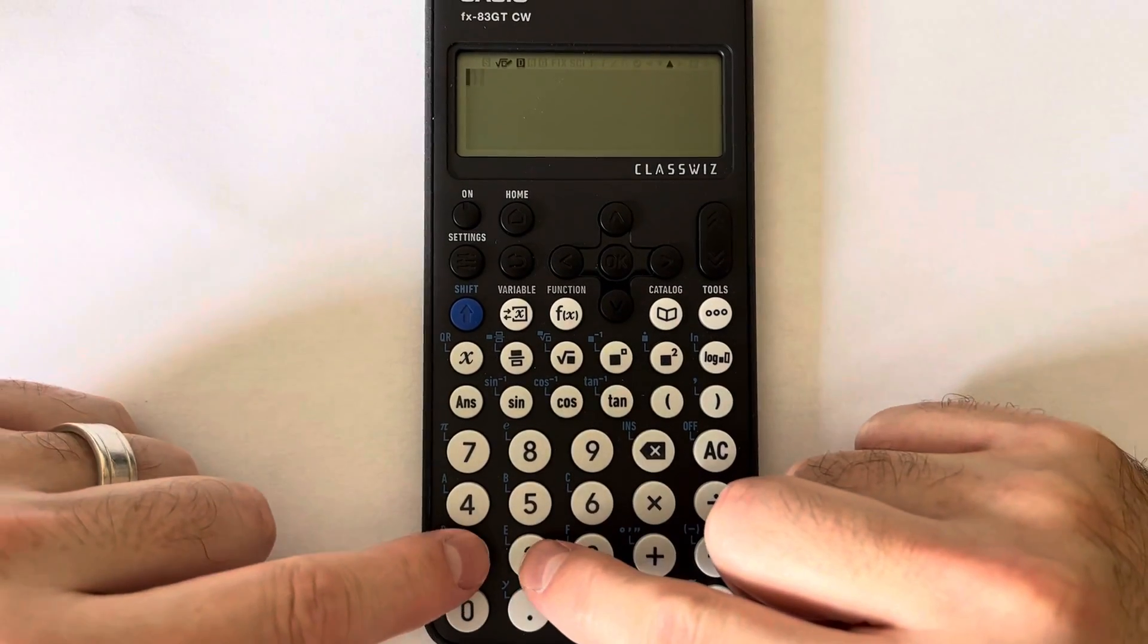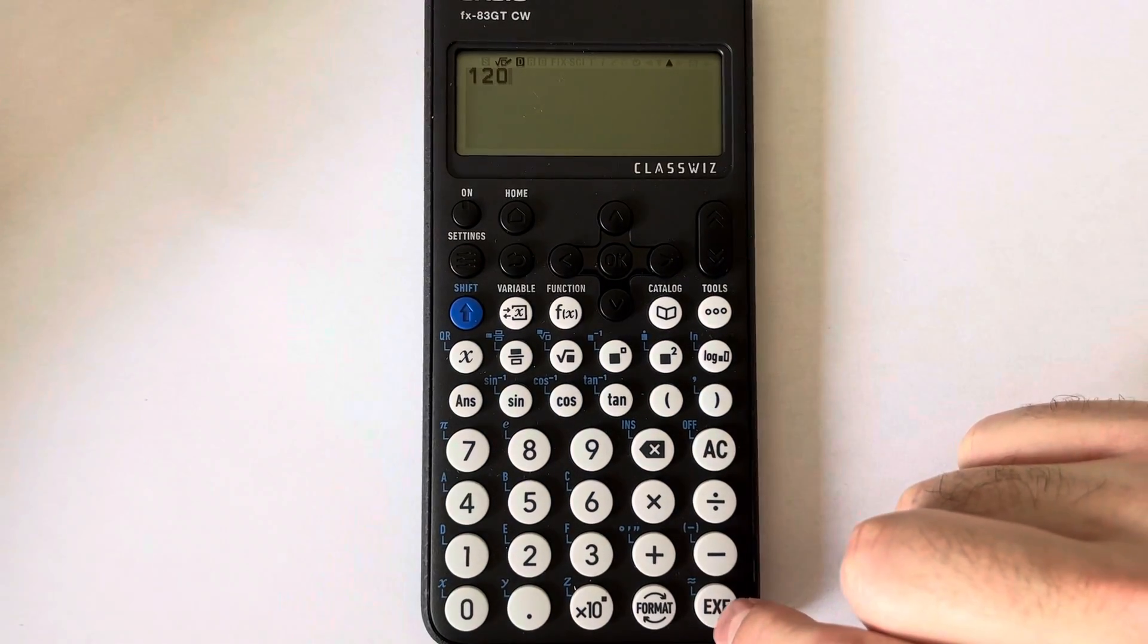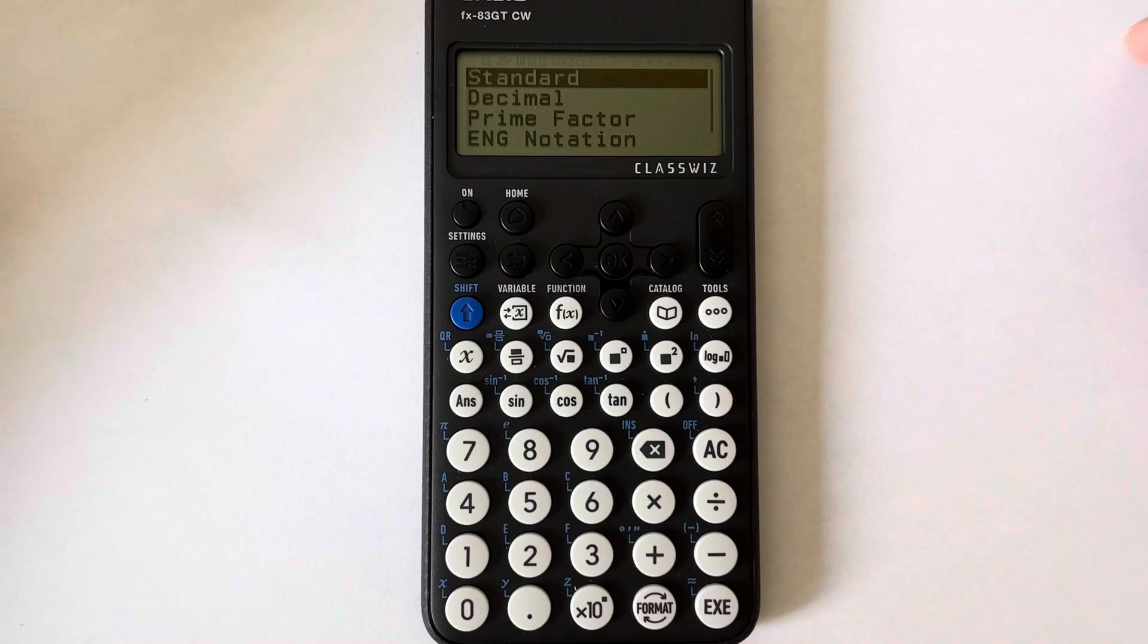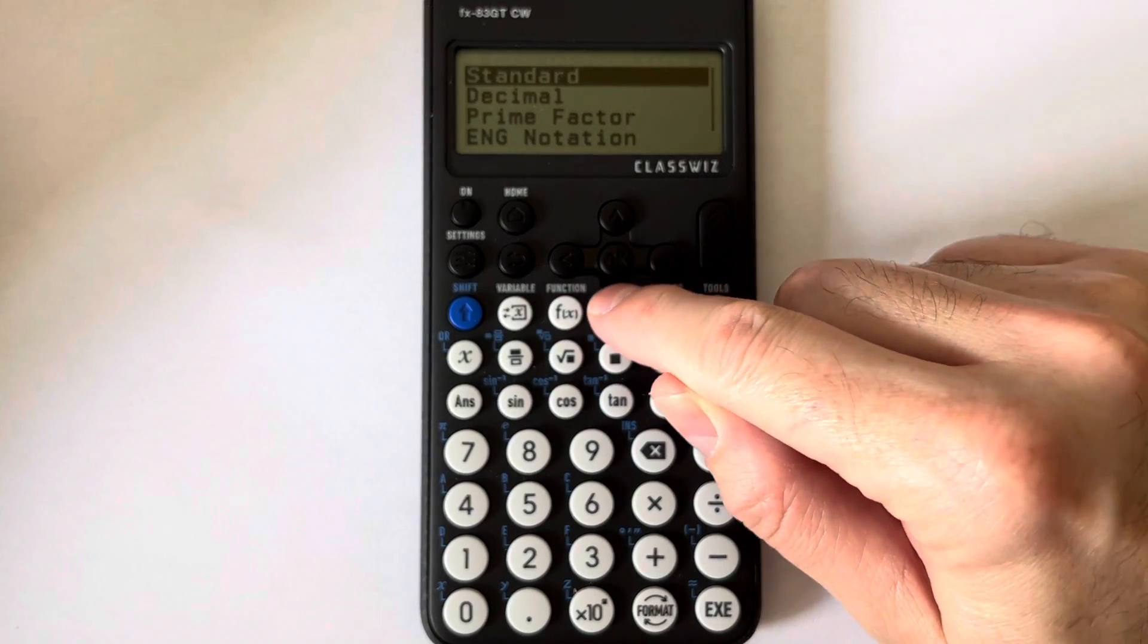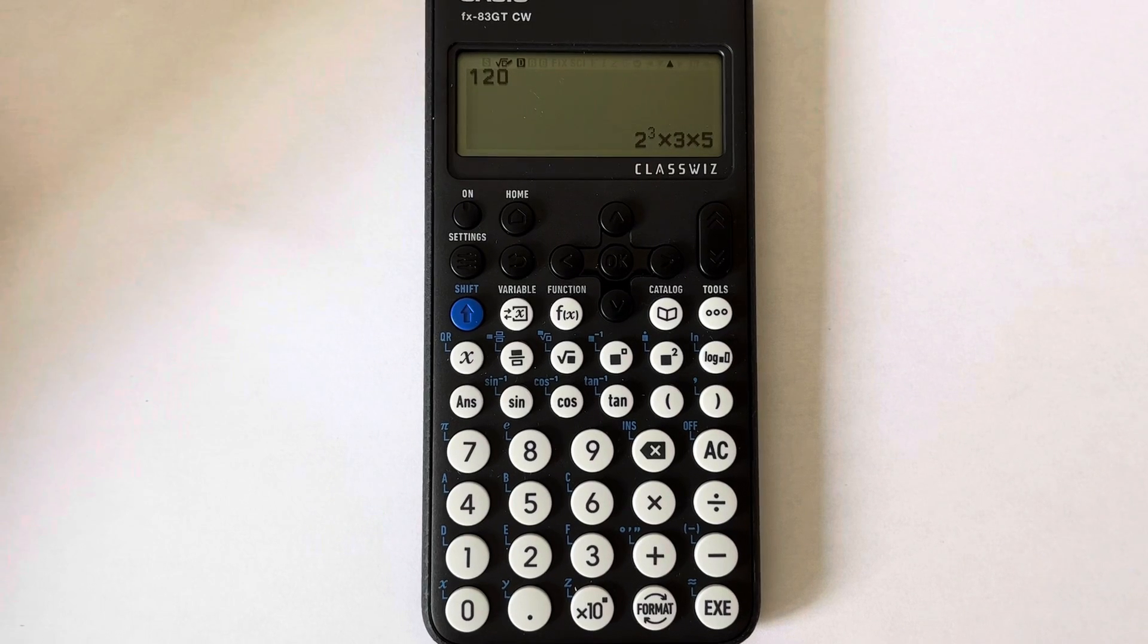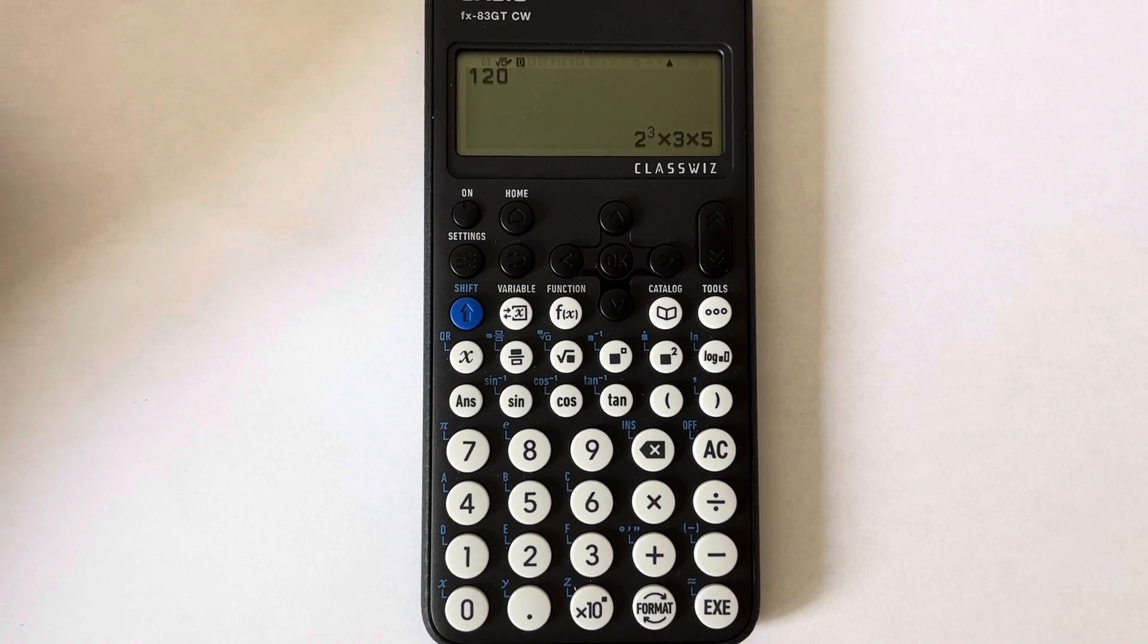If you type in 120, press the execute key, and then press format and scroll down to prime factor. There you go, there's the product of prime factors, so it's 2 cubed times 3 times 5.